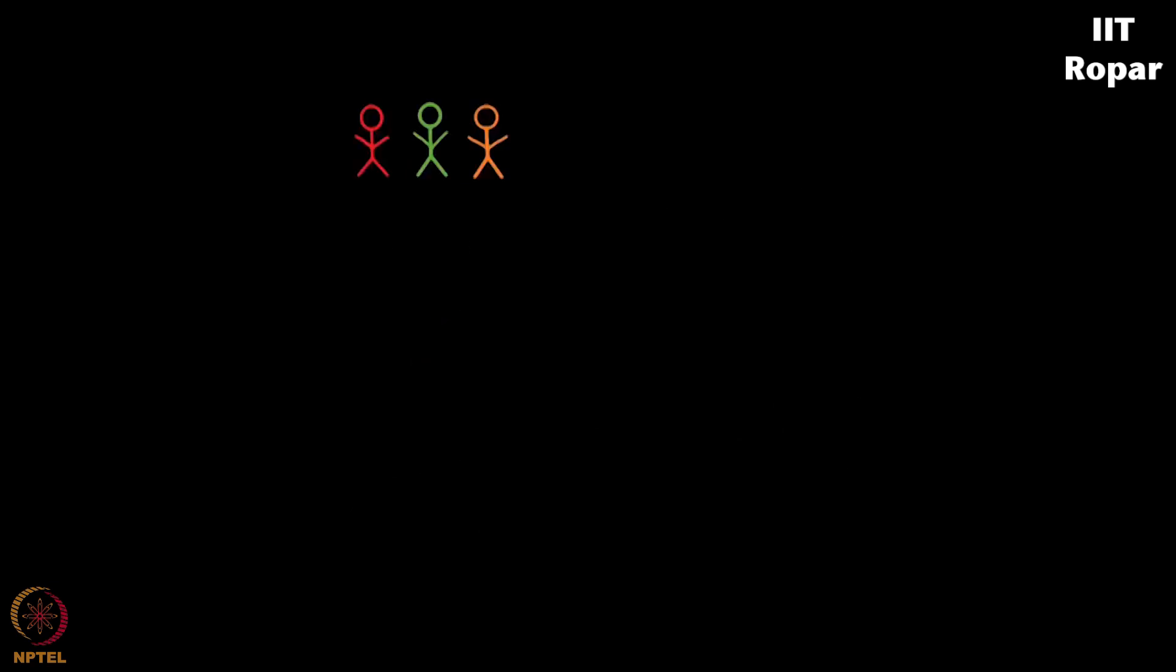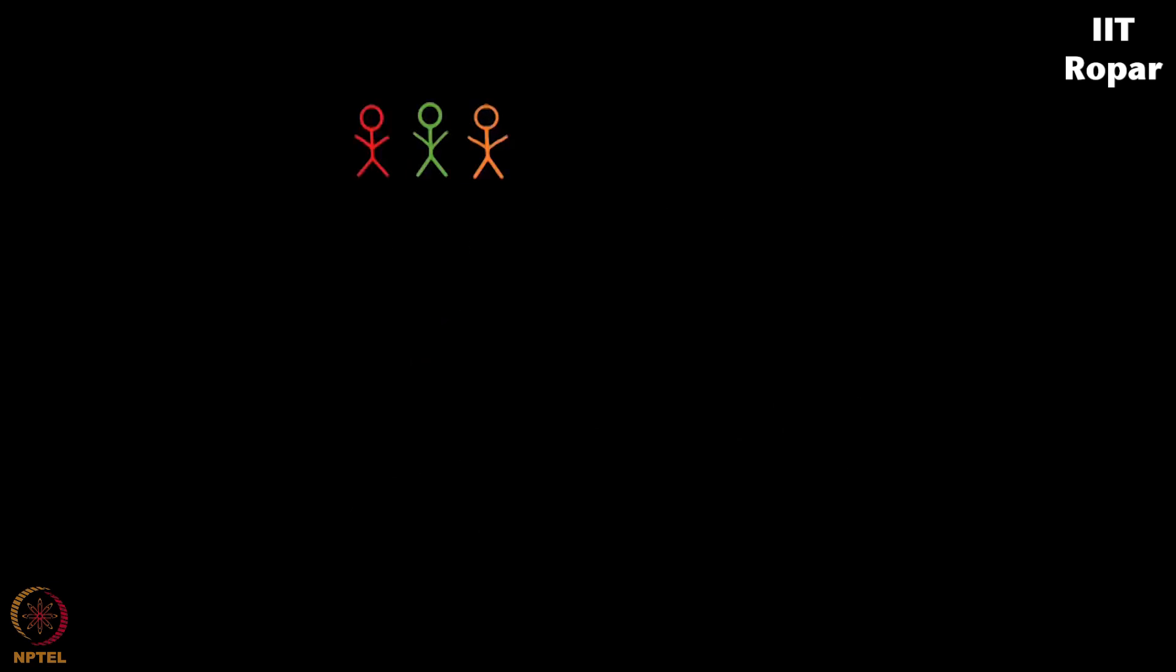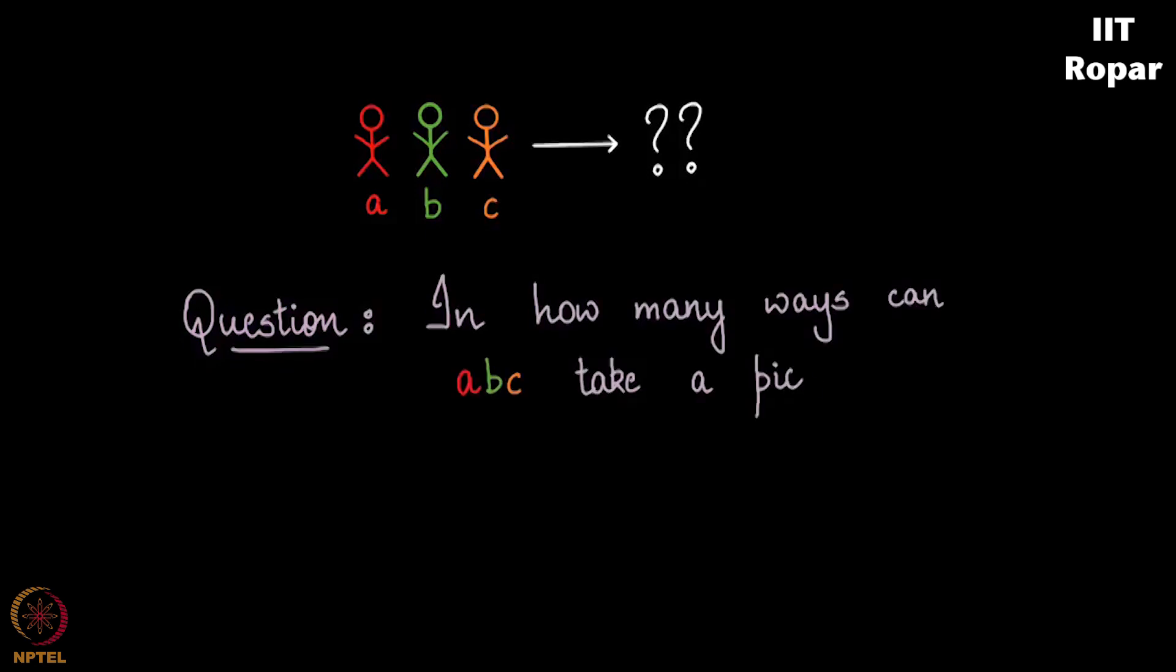How about three people, let's say A, B and C, let's see in how many ways they can take the picture. So how do we solve this question? The question is this, there are these three people A, B, C, in how many ways can you arrange them and take a picture?